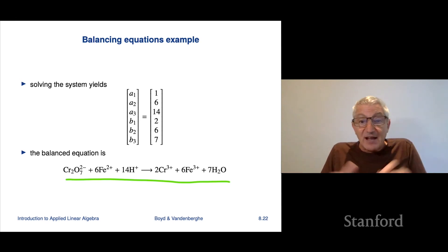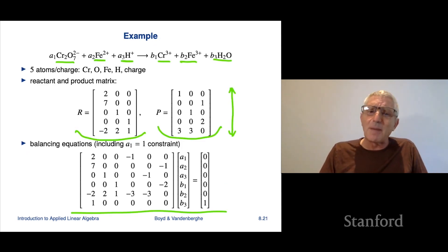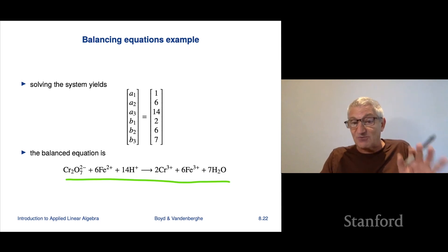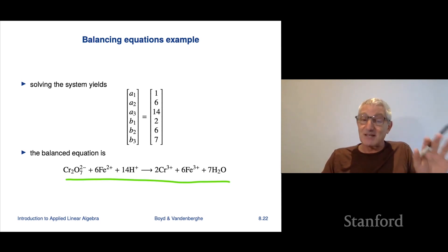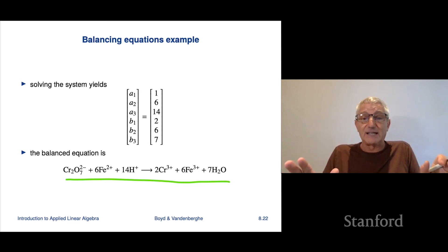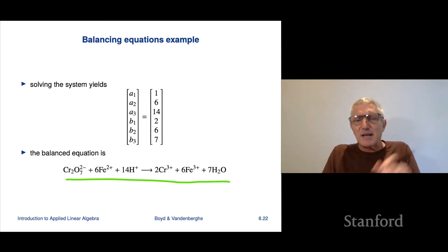You could have found those coefficients by trial-and-error, especially with so many zeros, but later we will see very organized methods — not just to solve 6-by-6 systems, but 600-by-600 systems, very fast. This is an example to show how balancing chemical equations, like many problems in mechanical equilibrium, economics, and many other fields, naturally leads to systems of linear equations.